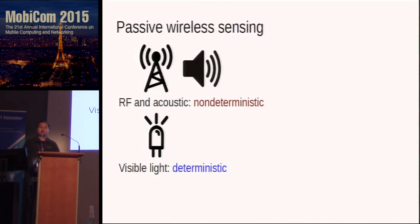Previously, there have been various efforts in passive wireless sensing. There are attempts done in the RF and acoustic channel. However, these channels are not very deterministic, which led to many problems. There is also work done in the visible light channel, which provides deterministic channel characteristics.